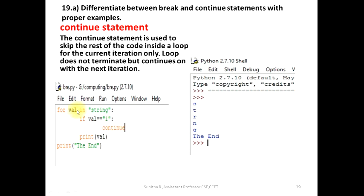Loop continues. Initially, val is S. S is equal to i? No. Print value. S prints. Then next character T. T equal to i? No. Print value. T prints.